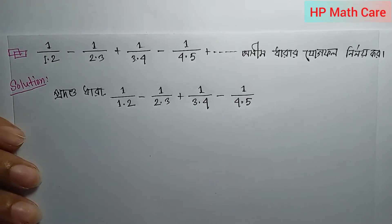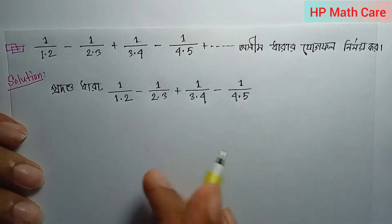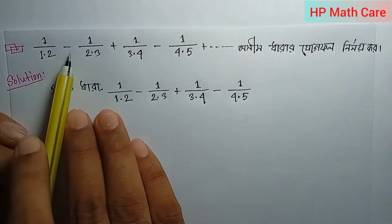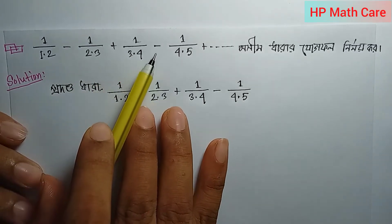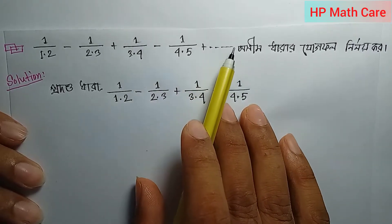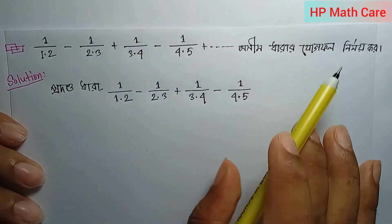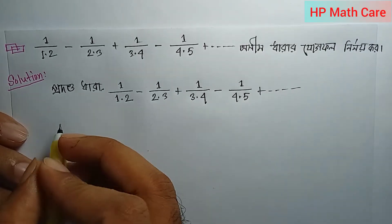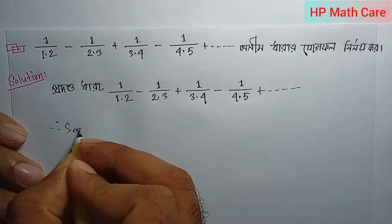Let's see the next lesson. The series is: 1/(1·2) minus 1/(2·3) plus 1/(3·4) minus 1/(4·5) plus... and so on.